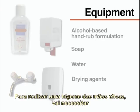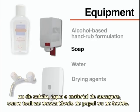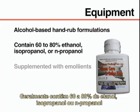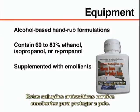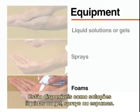To perform adequate hand hygiene, you will need an alcohol-based hand rub formulation or soap, water, and drying agents such as disposable paper or cloth towels. Use alcohol-based hand rubs with proven antimicrobial efficacy. These usually contain 60–80% ethanol, isopropanol, or n-propanol, or a combination of these products. These hand rubs are supplemented with emollients to protect the skin. They are available as liquid solutions, gels, sprays, or foams.